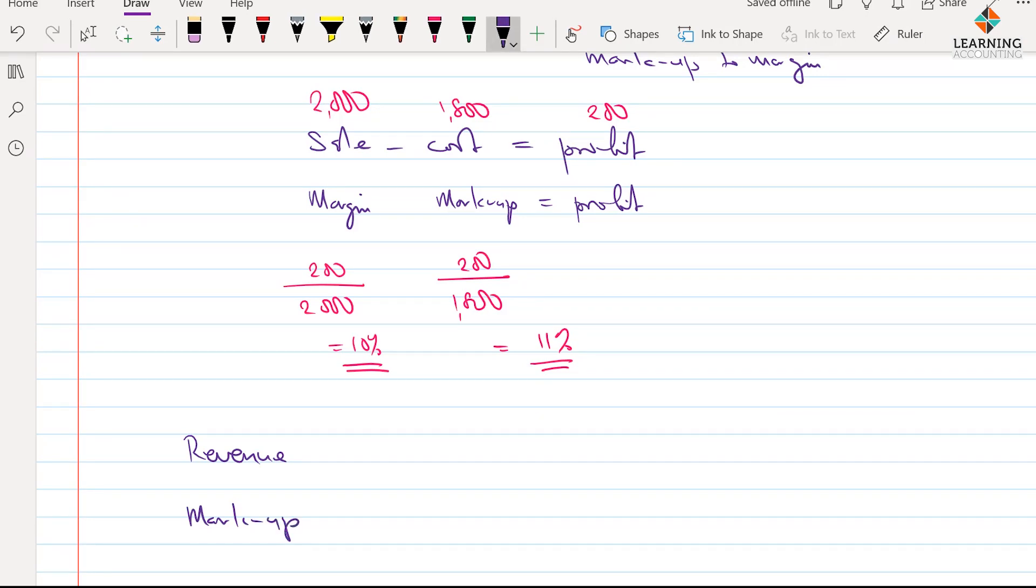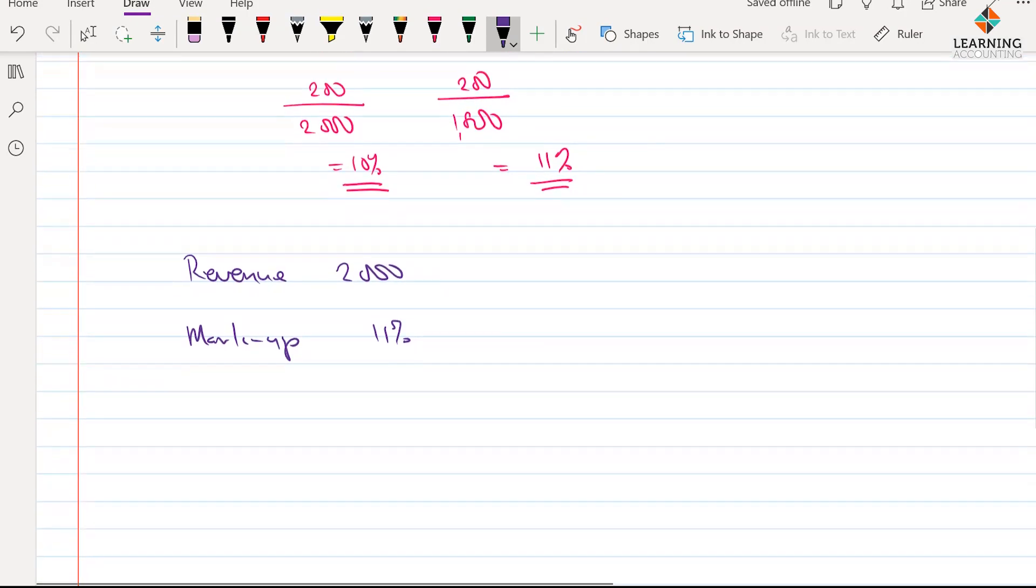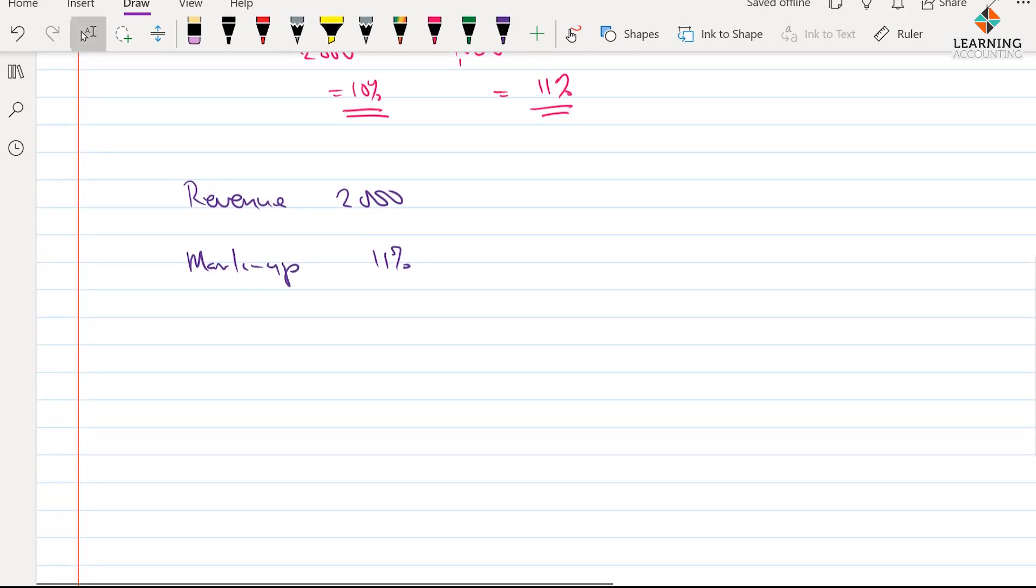Now, where you're given revenue and markup, which in this case we've assumed our revenue to be 2,000 and our markup to be 11%, what you're going to be looking for is you're either looking for the cost element or you're looking for the profit element.